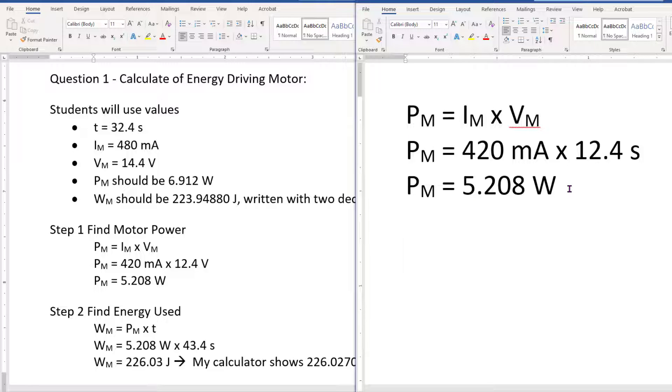So the next one's going to be the energy of the motor equals the power of the motor times time. Enter again. The power of the motor equals, and I'm going to type in this. Now some of you guys may be wondering because you know that I want two decimal places in my answer, but that's the final answer.